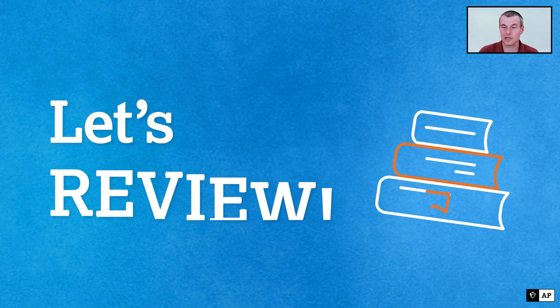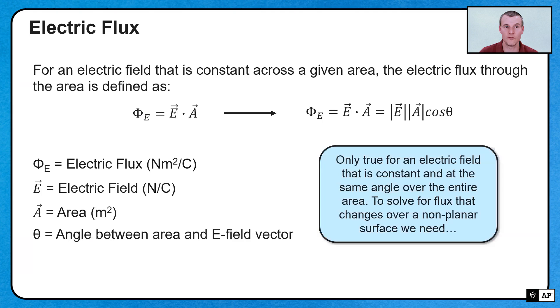Before we dive into this particular video, let's do a brief review of what electric flux was. We had the dot product of the E field dot the area vector, which ended up looking something like this. But here's the key thing: this equation is only true if it's a planar surface where the angle is constant for every single area term, and the E field is constant for every single area. Basically, if all these things are constants, things are great.